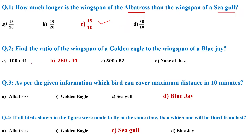Next question: Find the ratio of the wingspan of the golden eagle to the wingspan of the blue jay. This is very interesting — when you put the sizes in ratio, that will be 250 : 41, as per the given information.